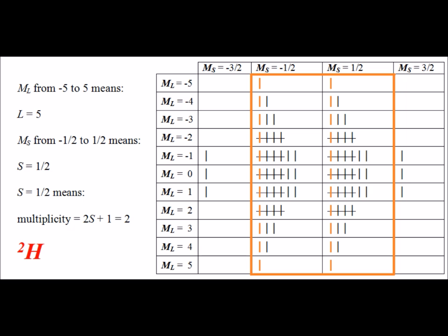After removing the indigo colored microstates, we again look for the largest rectangular region where each box contains at least one microstate. One such region is highlighted in orange. The M sub S values run from minus one half to plus one half, telling us big S equals one half. The big M sub L values run from minus five to plus five, telling us big L equals five. L equal to five corresponds to a capital H, and with spin one half, the spin multiplicity is two, giving us a term symbol of doublet H.